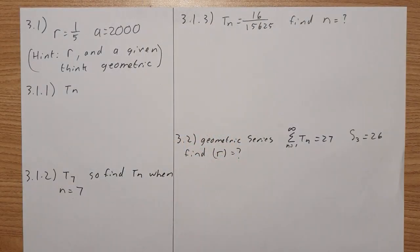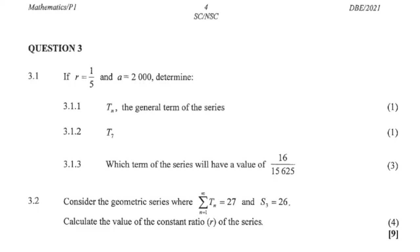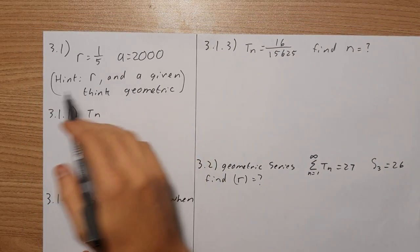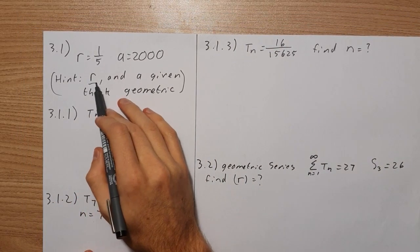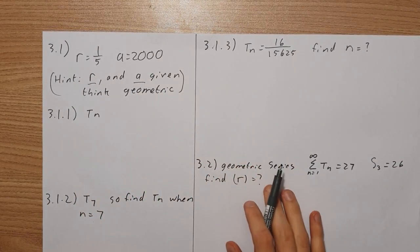Let's have a look at question 3, which has to do with sequences and series. In this paper, it's focusing on series. Looking at question 3.1, it says if r equals 1 over 5 and a equals 2000, then for 3.1.1 determine Tn, the general term of the series. The first thing you should realize, because r and a are given, you should be thinking geometric.